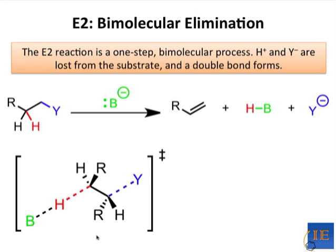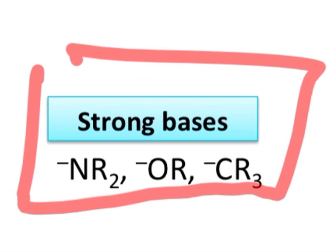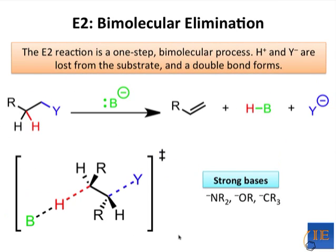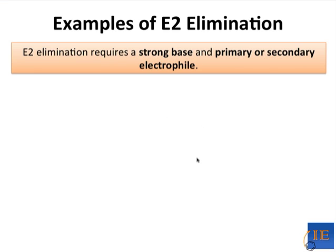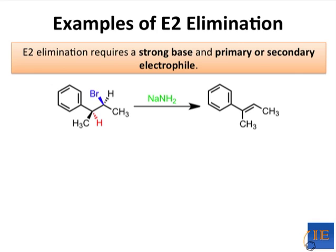Only strong bases cause the E2 elimination reaction to occur. The most common bases used are NR2⁻, OR⁻, and CR3⁻. E2 will always require a strong base to proceed because the alpha hydrogen is not very acidic — it takes a really reactive pair of electrons to remove a proton alpha to a leaving group. The electrophilic carbon atom needs to be primary or secondary because steric hindrance inhibits the reaction; tertiary electrophiles are simply too crowded to participate in E2 reactions. You should keep in mind the concerted nature of E2 reactions and how the transition state influences product stereochemistry. In this example, we can see that only the E product forms, which follows directly from the anti-periplanar nature of the transition state. Pause the video and see if you can draw a transition state for this reaction that explains the stereochemistry of the product.